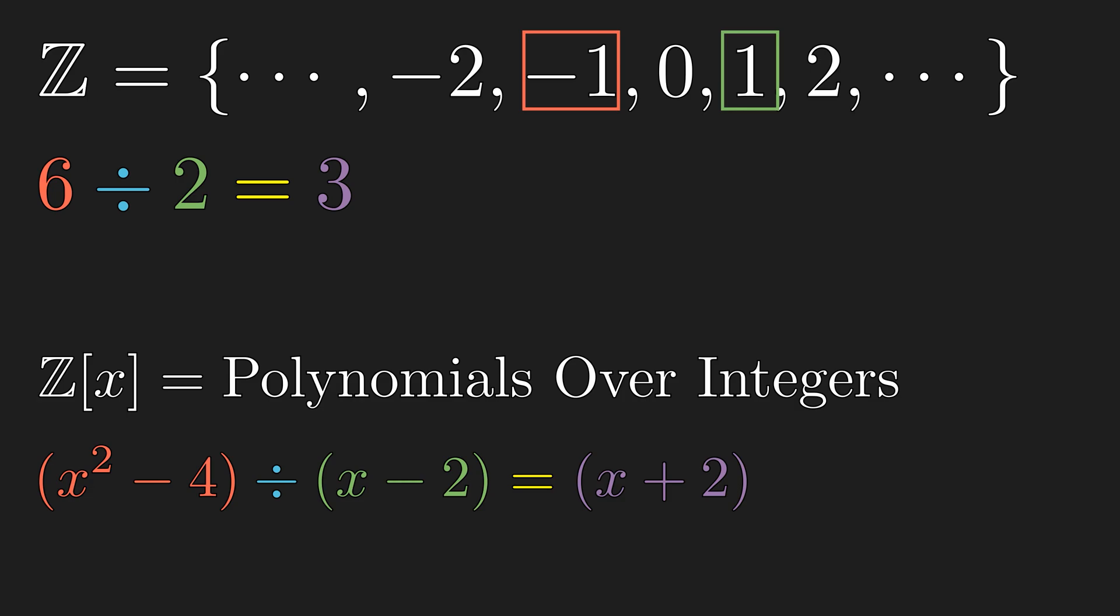We can think about division not as an operation, but as a divisibility rule, meaning 6 divided by 2 is equal to 3 because 2 times 3 is equal to 6. And this is more like how we think about division in elementary school before we learn about the fraction. And we can extend that idea to work for any ring in general.